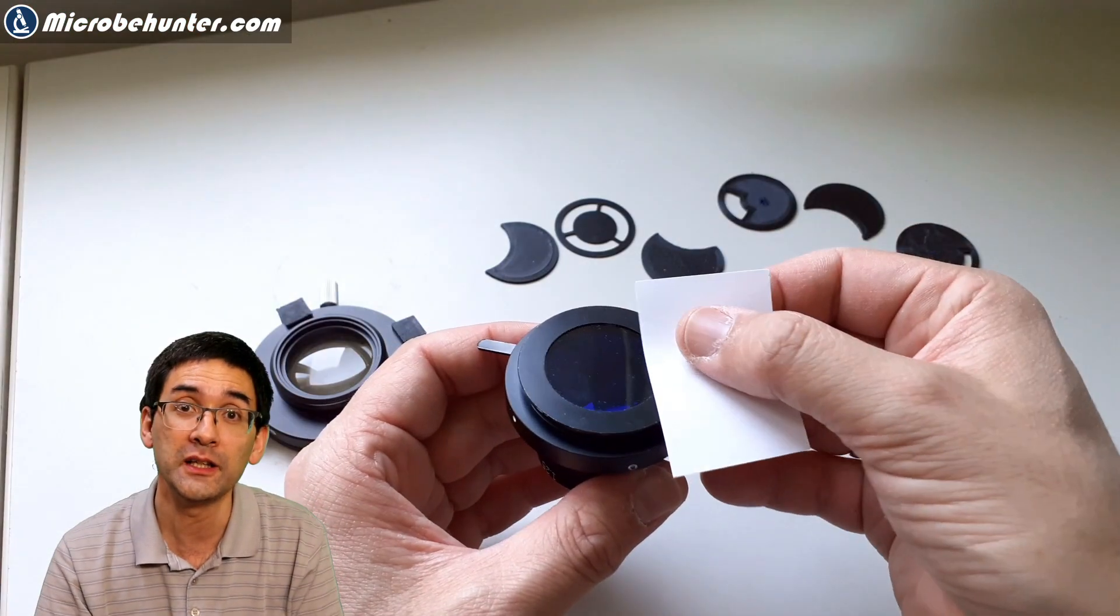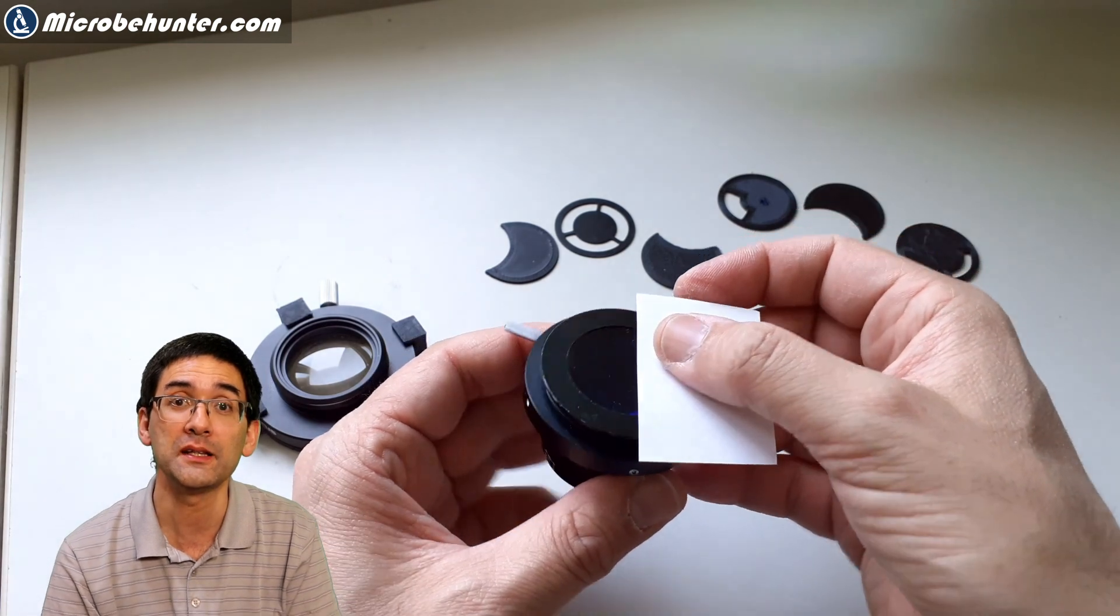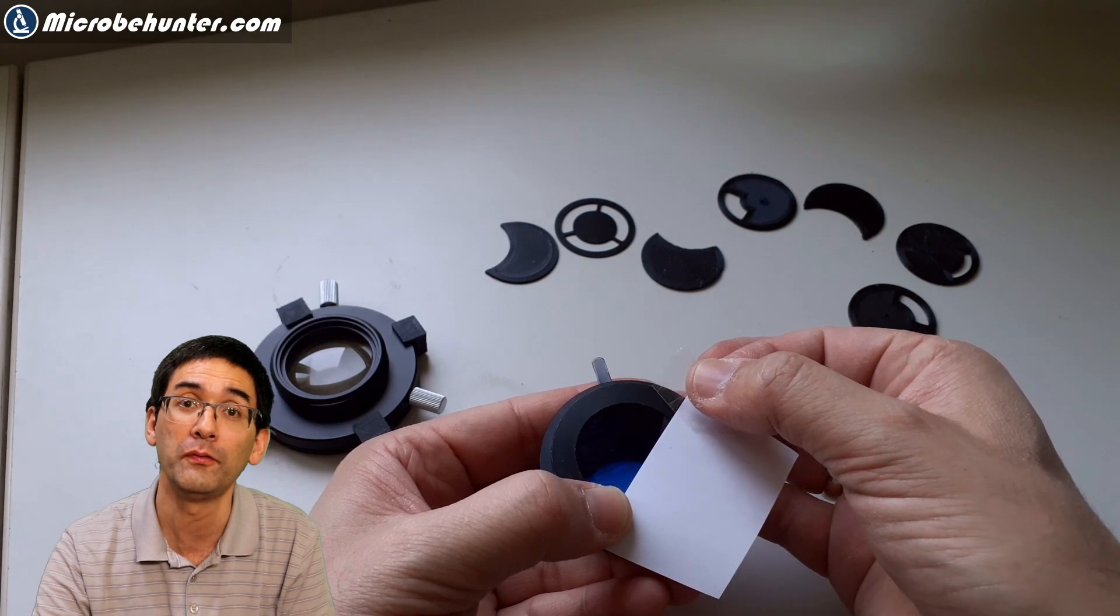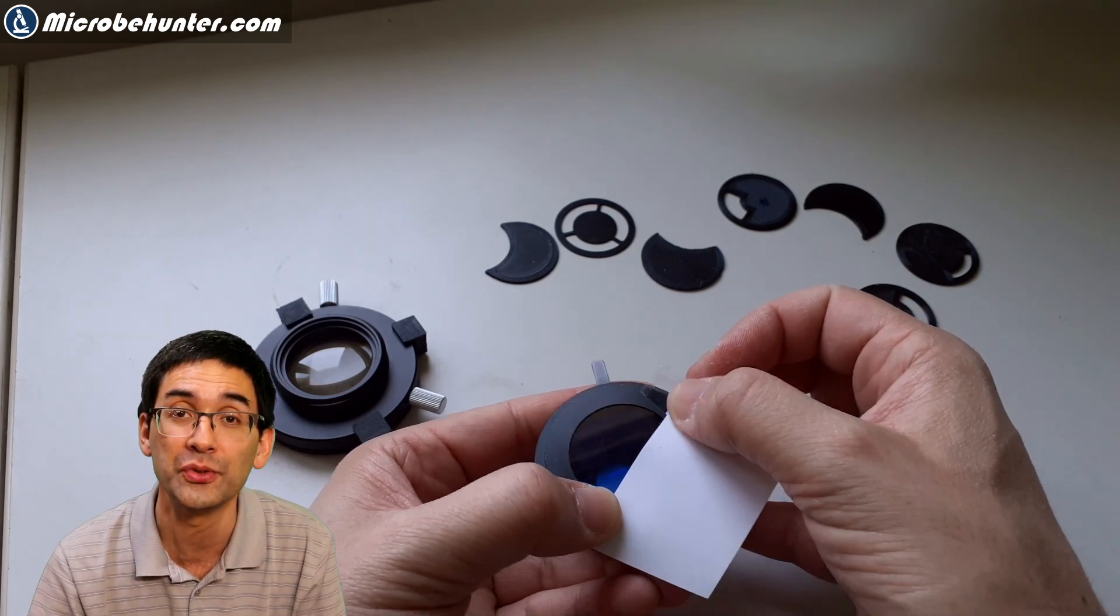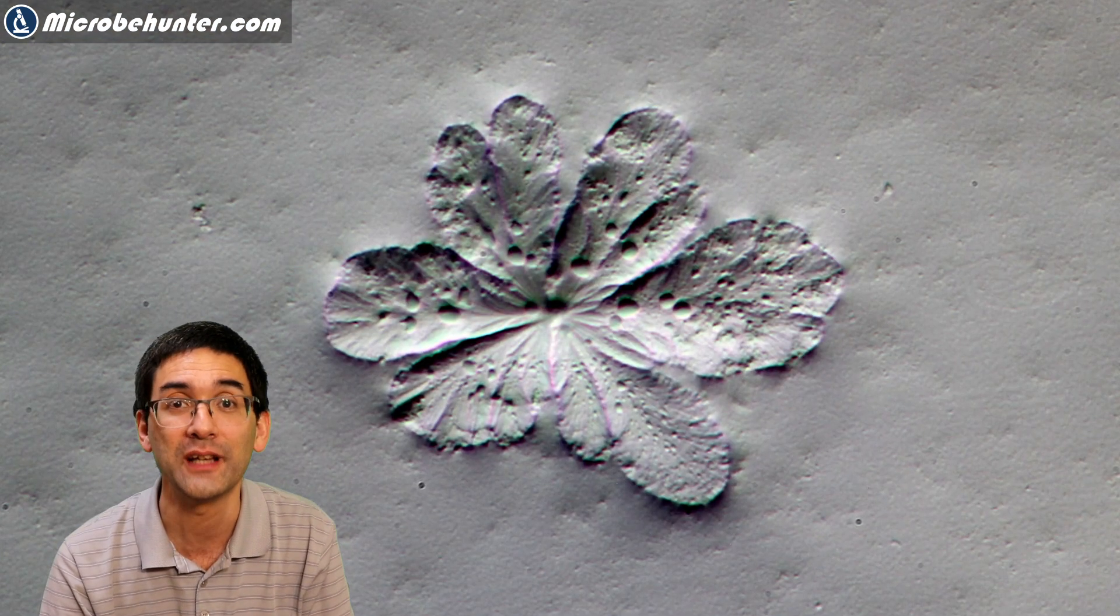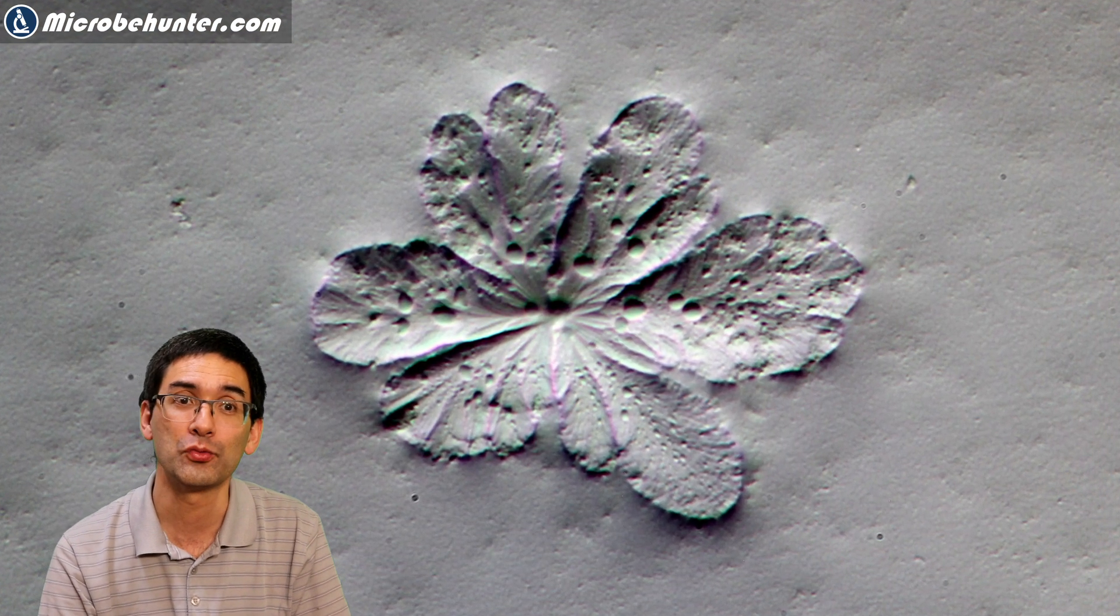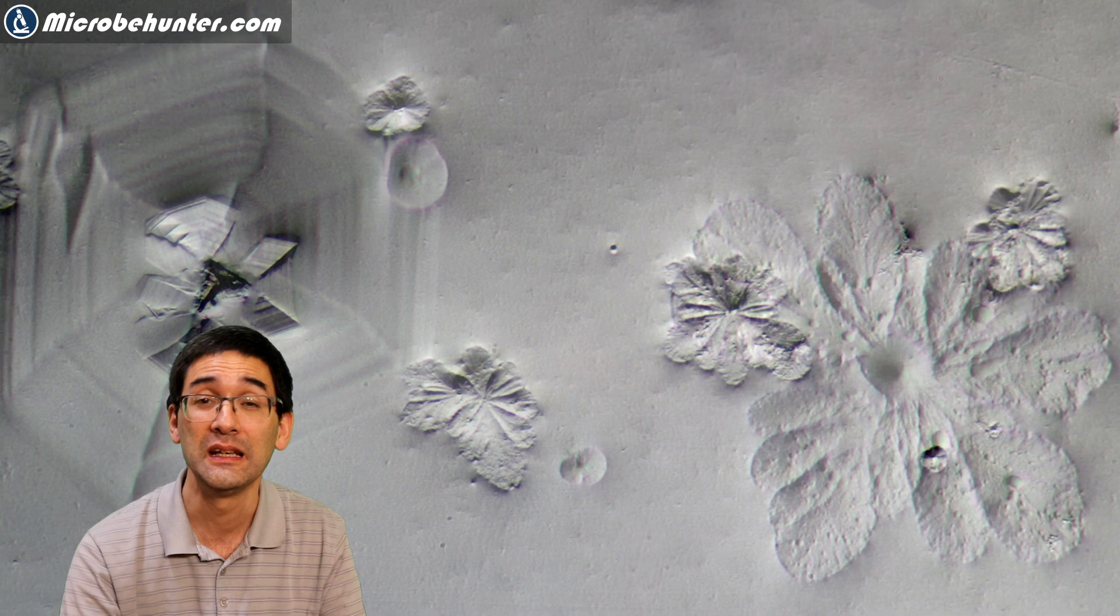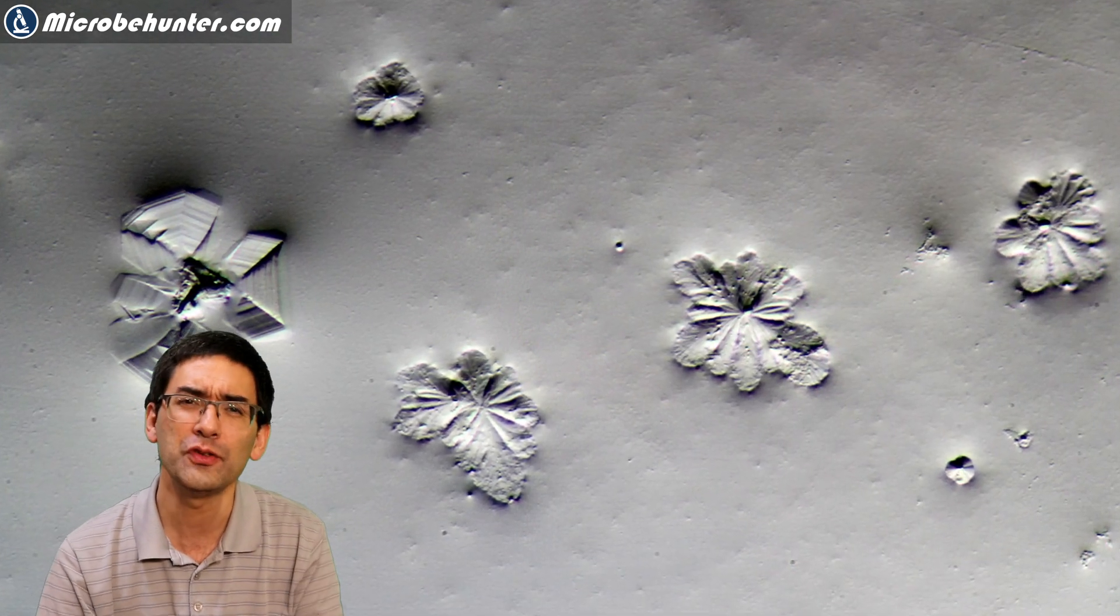This is how I did my oblique illumination. You simply take a piece of paper and cover part of the condenser. I simply unmounted the condenser now to show you how this is done. This is when you see those very nice and beautiful structures that almost look three-dimensional because the light is coming from the side and casting a shadow.